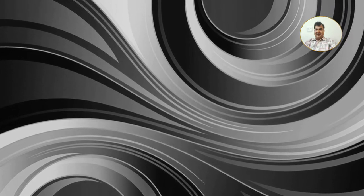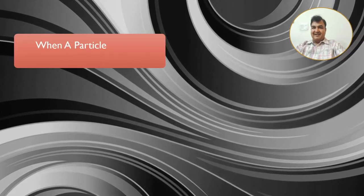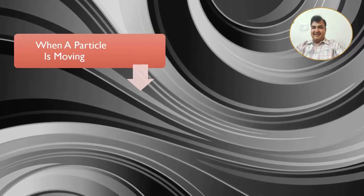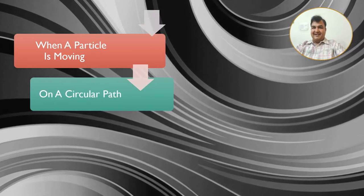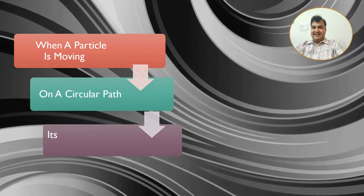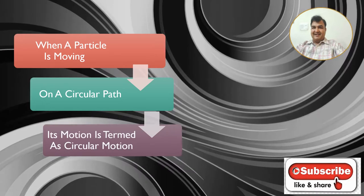Now we have the answer to your question: what is circular motion? When a particle is moving on a circular path, its motion is termed as circular motion.